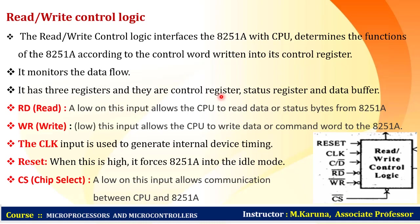This block contains a control register, command register, status register, and data buffer (in/out data register). The read signal is active-low, allowing the processor to read data or status bytes from 8251. The write signal is also active-low, allowing the processor to write data or command words to 8251. The clock input coordinates all internal device timings. Reset is an active-high signal that forces 8251 into idle mode. Chip select is active-low and enables communication between processor and 8251.